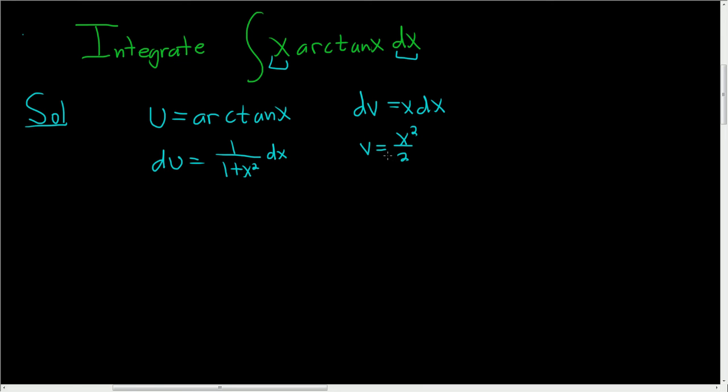Now let's go ahead and use the formula. So we have that the integral of x arctan x dx. This is equal to uv minus vdu, or the integral of vdu.